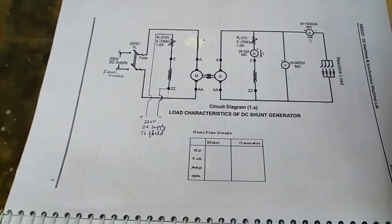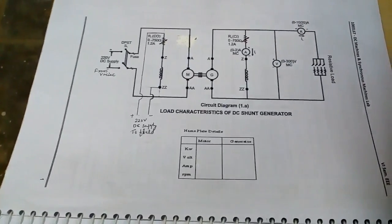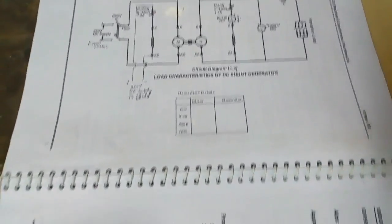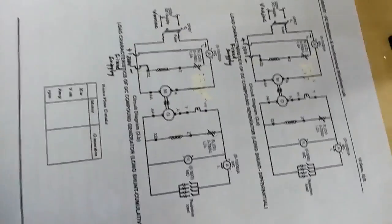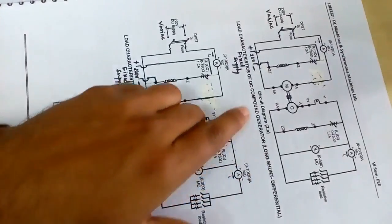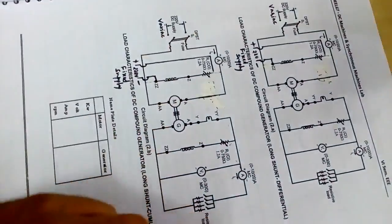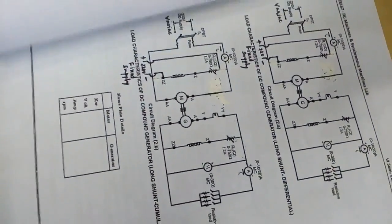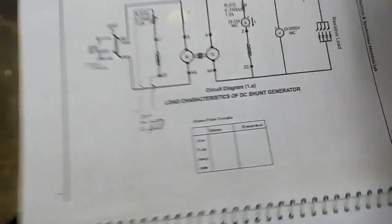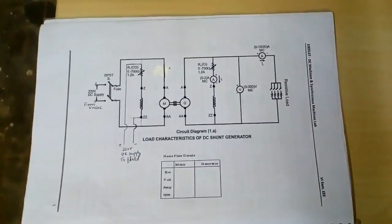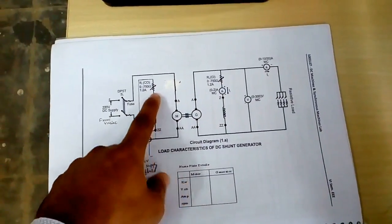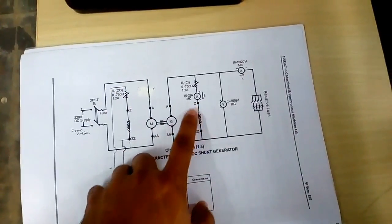A similar connection is used for a compound generator — long shunt and short shunt. In long shunt, we have cumulative and differential configurations; in short shunt, we also have cumulative and differential. We will conduct the experiments for differential and cumulative in long shunt. The procedure for the compound shunt in short shunt is the same.